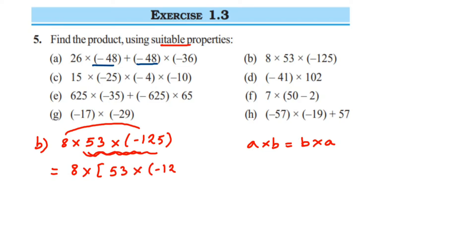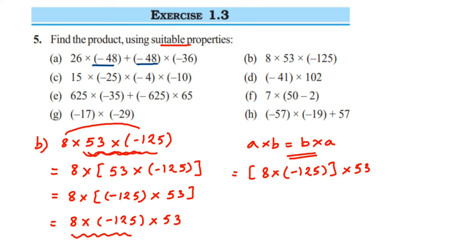Rearranging the terms using commutative property: 8 into minus 125, multiplied by 53. Opening the brackets: 8 into minus 125 is easy to multiply. Putting a bracket across 8 and minus 125 and then multiplying by 53 — 8 times 125 gives 1000, and since 125 is negative, we get minus 1000. Then minus 1000 multiplied by 53 gives minus 53,000.